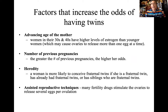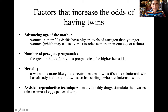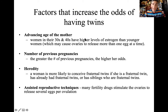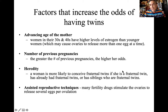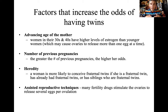Factors that increase the odds of having twins: first, the advancing age of mom. As mom gets older, estrogen levels fluctuate more and there's a greater chance she can ovulate more eggs each ovulation cycle, which may cause the ovaries to release more than one egg at a time — so the more eggs ovulated, the greater the chance of dizygotic pregnancies. Second, heredity: a woman is more likely to conceive fraternal twins if she is a fraternal twin, has already had fraternal twins, or has siblings who are fraternal twins — this goes back to the genetic tendency to ovulate multiple eggs at once.